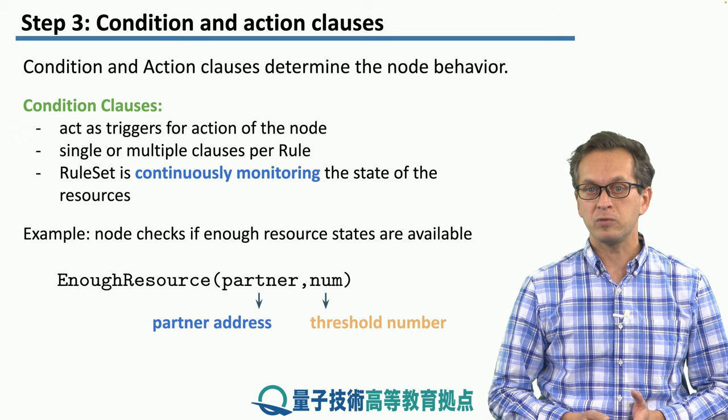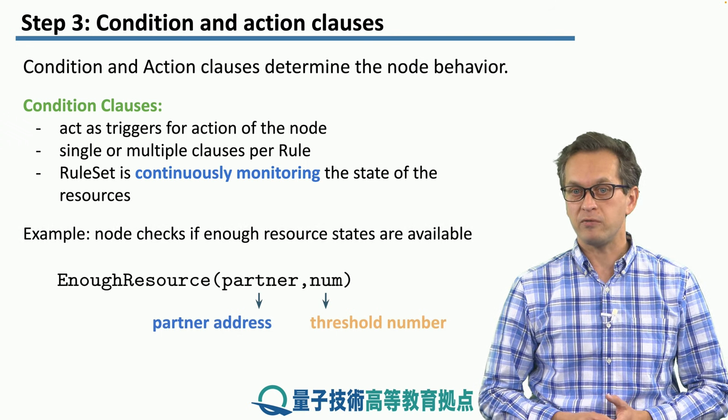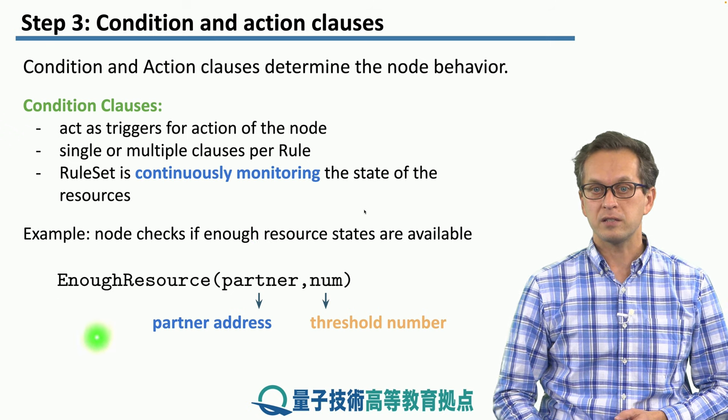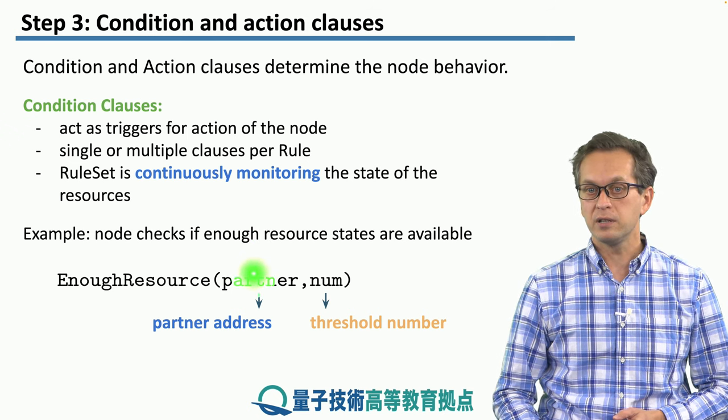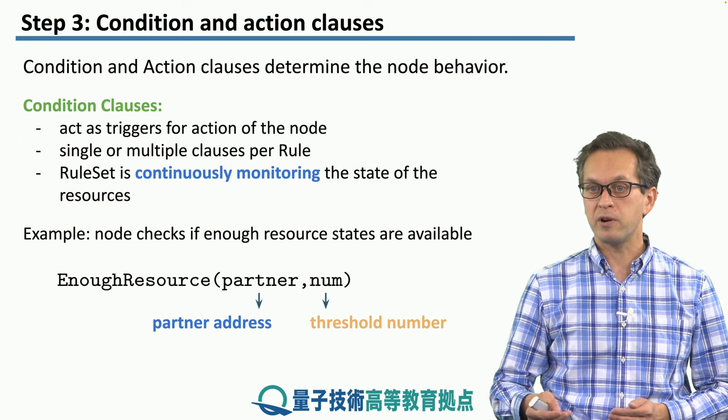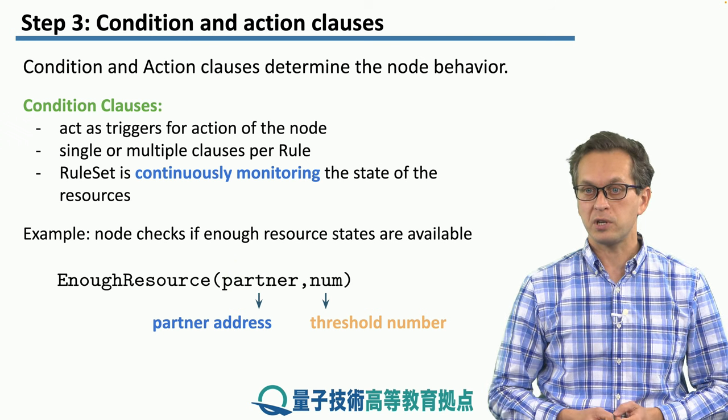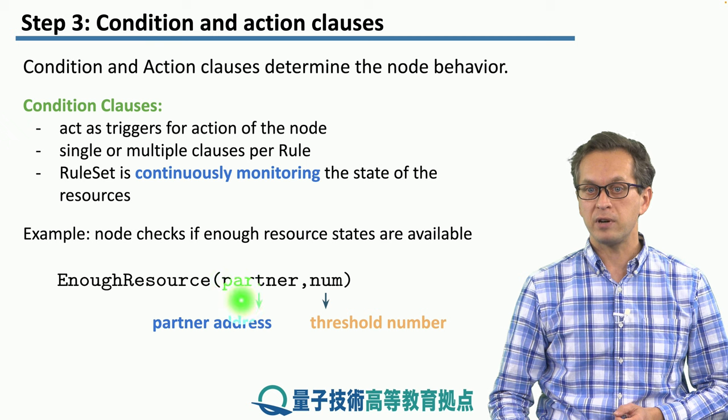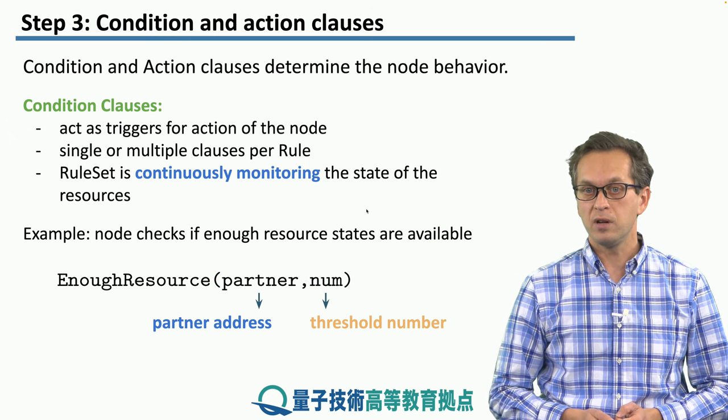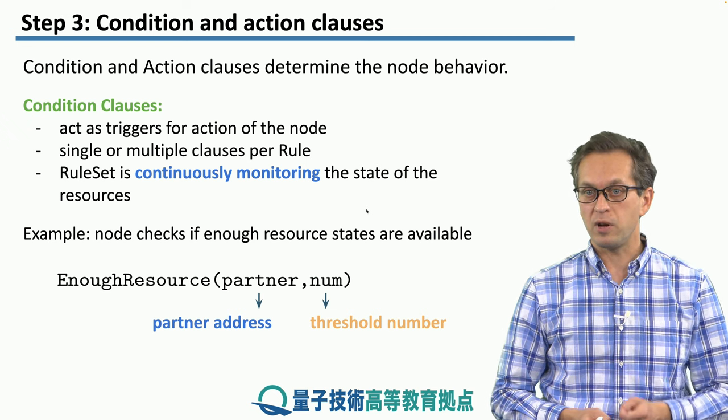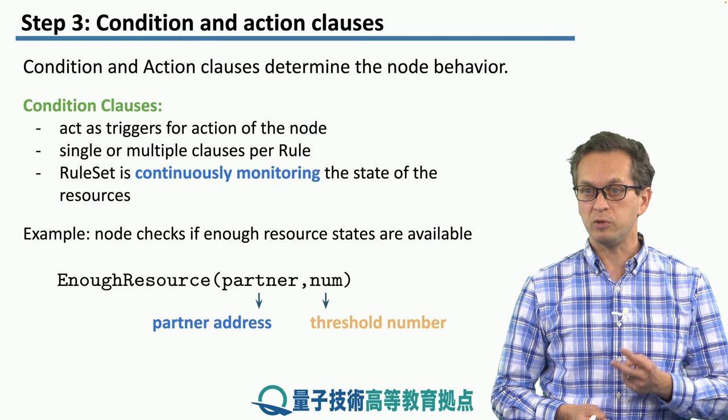An example would be checking whether we have enough resources. Here, this condition clause EnoughResource has two parameters. The partner, that's the address of the partner node with whom we are going to share bell pairs. And the number is the threshold number of bell pairs that we are checking for. For example, if we have entanglement swapping, it would be just one. If we have purification, it would be two.